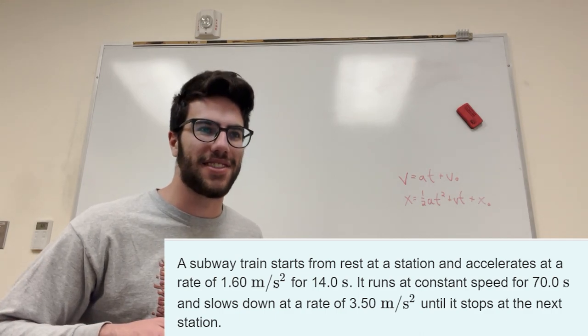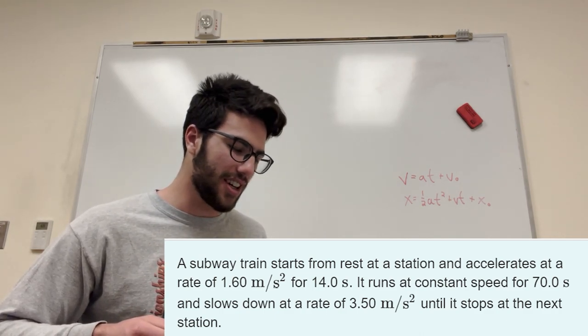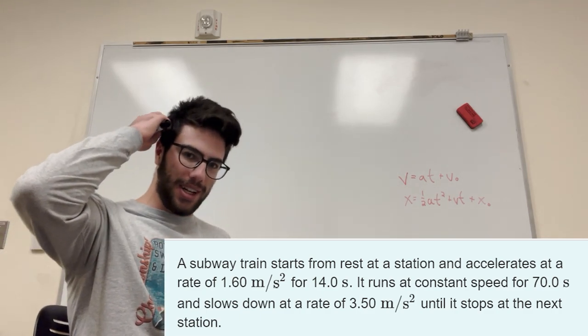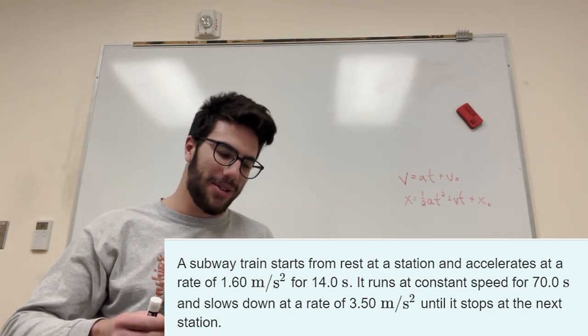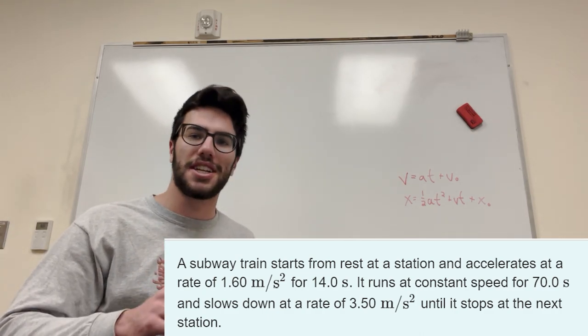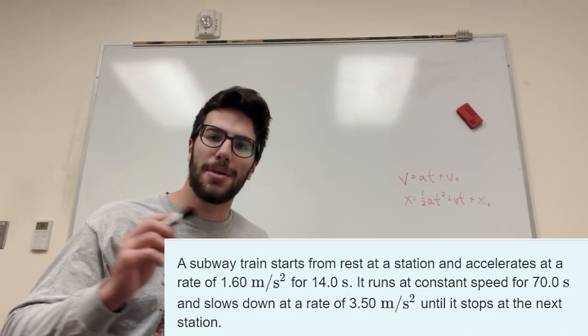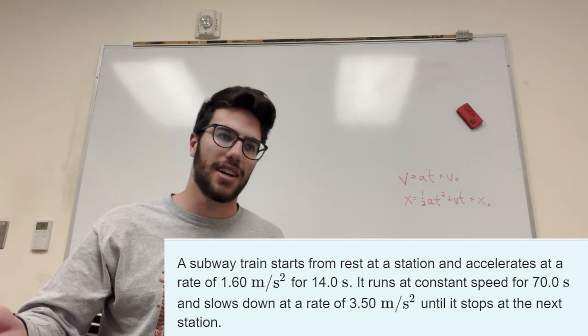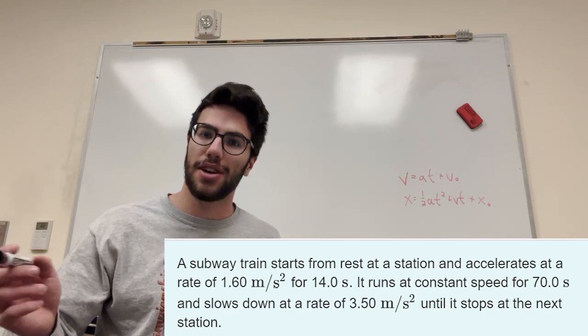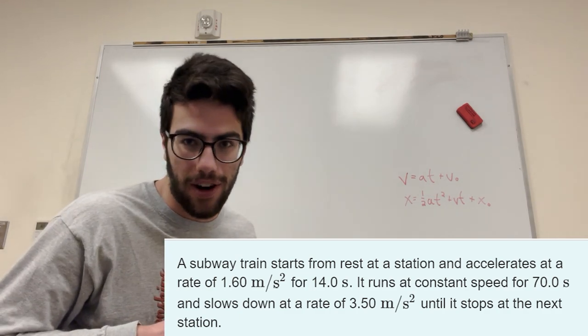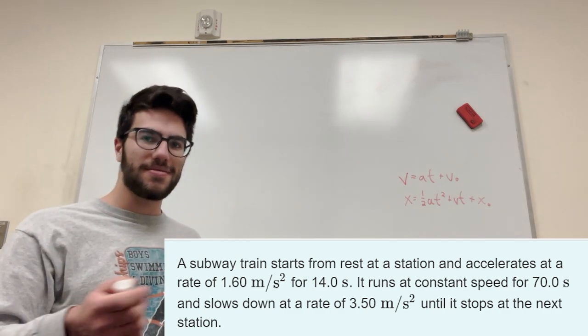Okay, that was a rocky start to the first video. Maybe I should start over. No, we don't start over here. Here we go. We have a problem. So we have a train, and it accelerates at 1.6 meters per second squared for 14 seconds. Then after 14 seconds, it goes the same speed for 70 seconds, and then it slows down at a rate of 3.5 meters per second squared until it stops. And we want to know how far did the train travel? Let's do it.